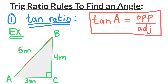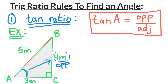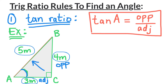Let's look at this right angle triangle ABC and find the tangent ratio of angle A. Labeling the sides according to angle A: the 4-meter side is opposite of angle A, 3 meters is adjacent to angle A, and of course 5 meters is always the hypotenuse, across from angle C.